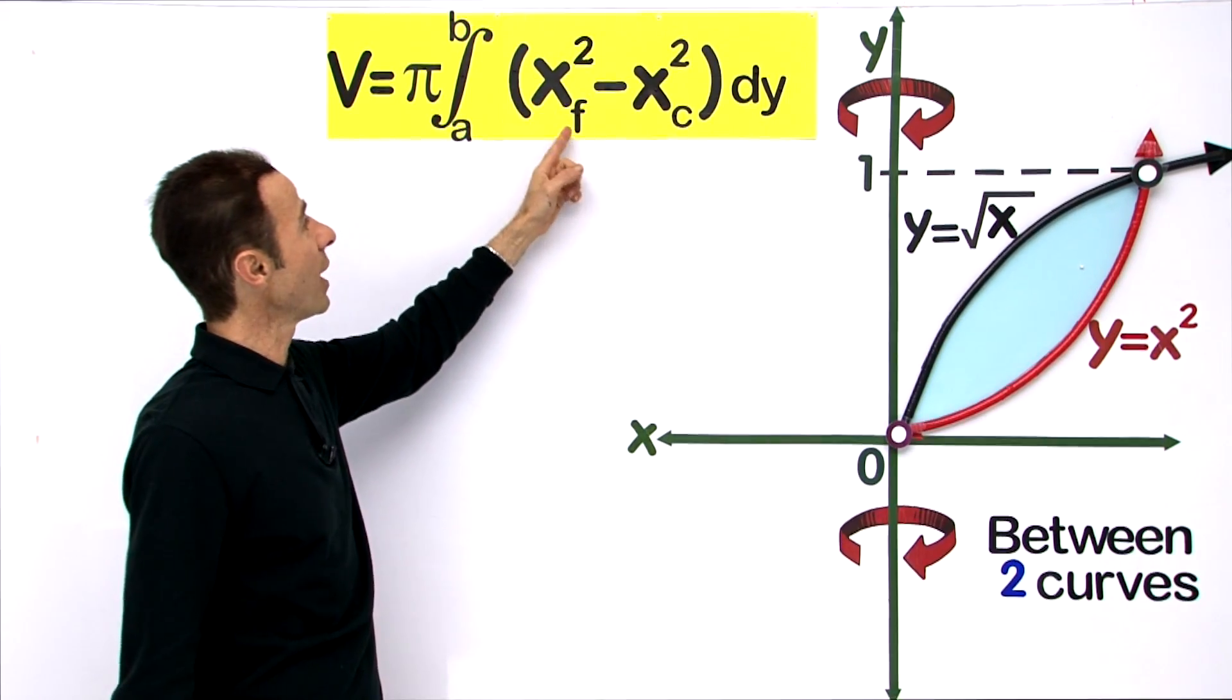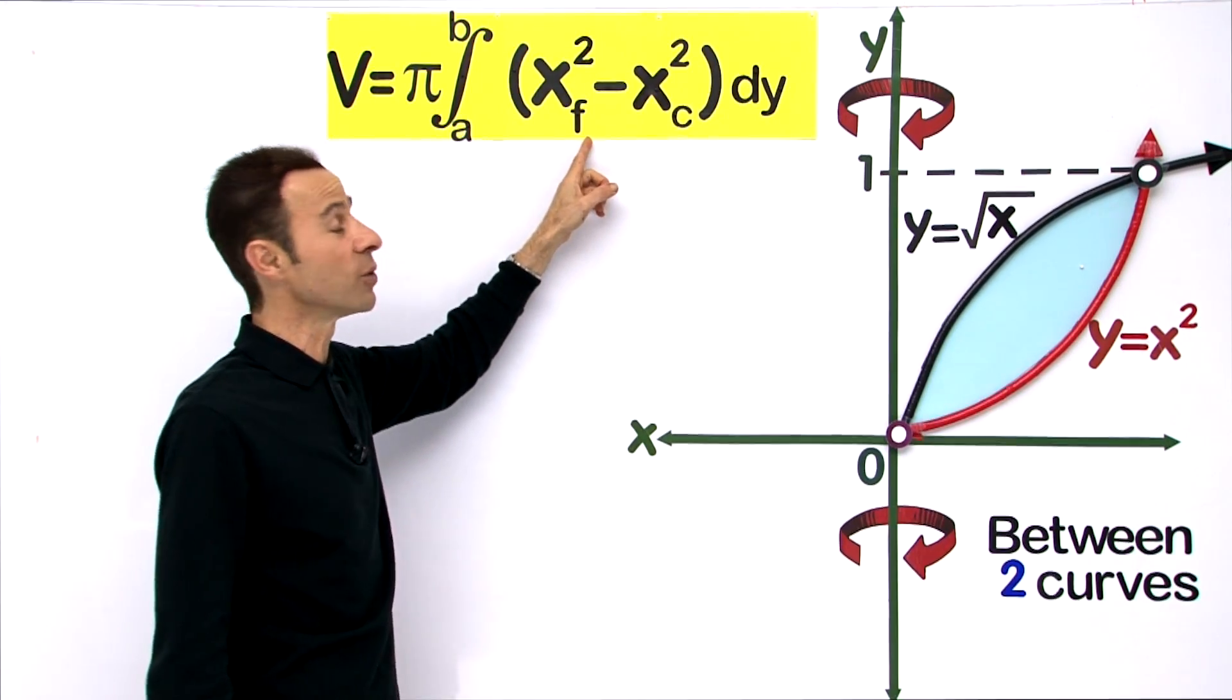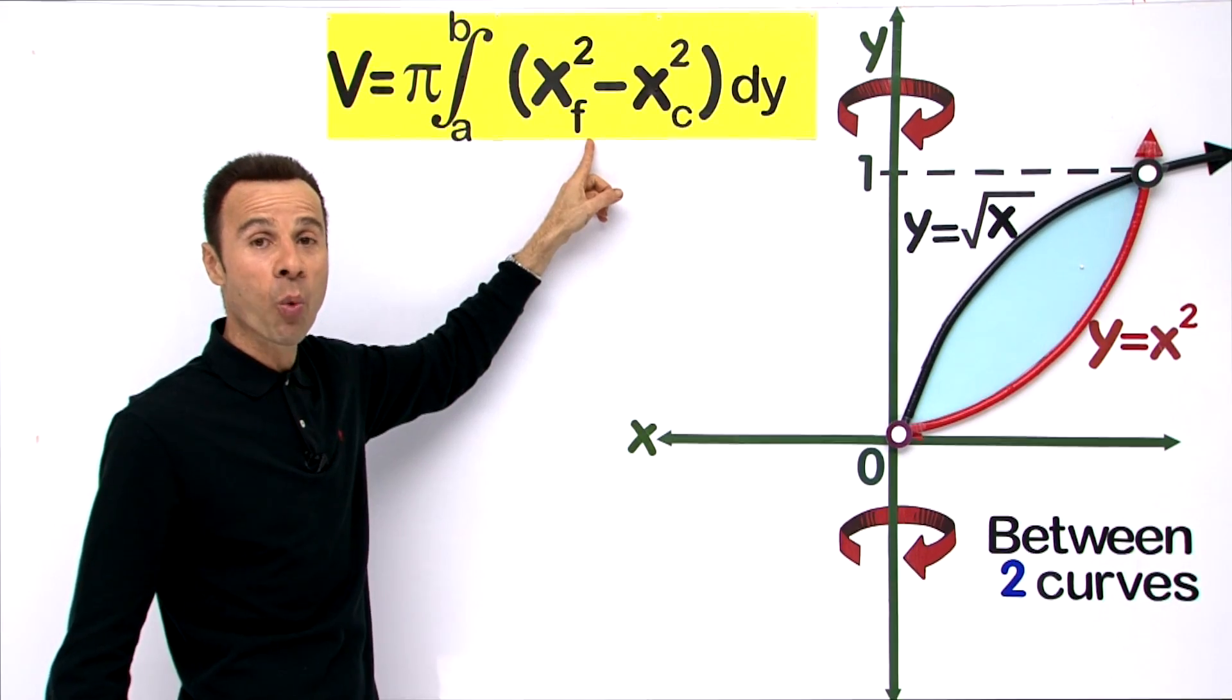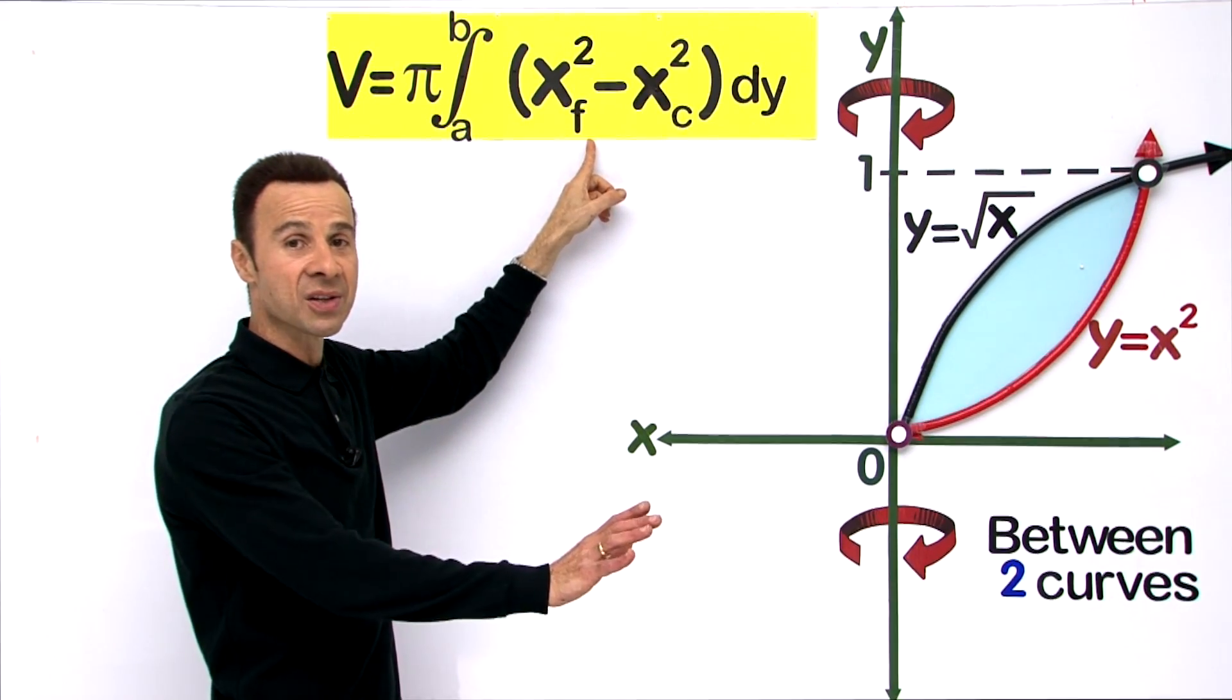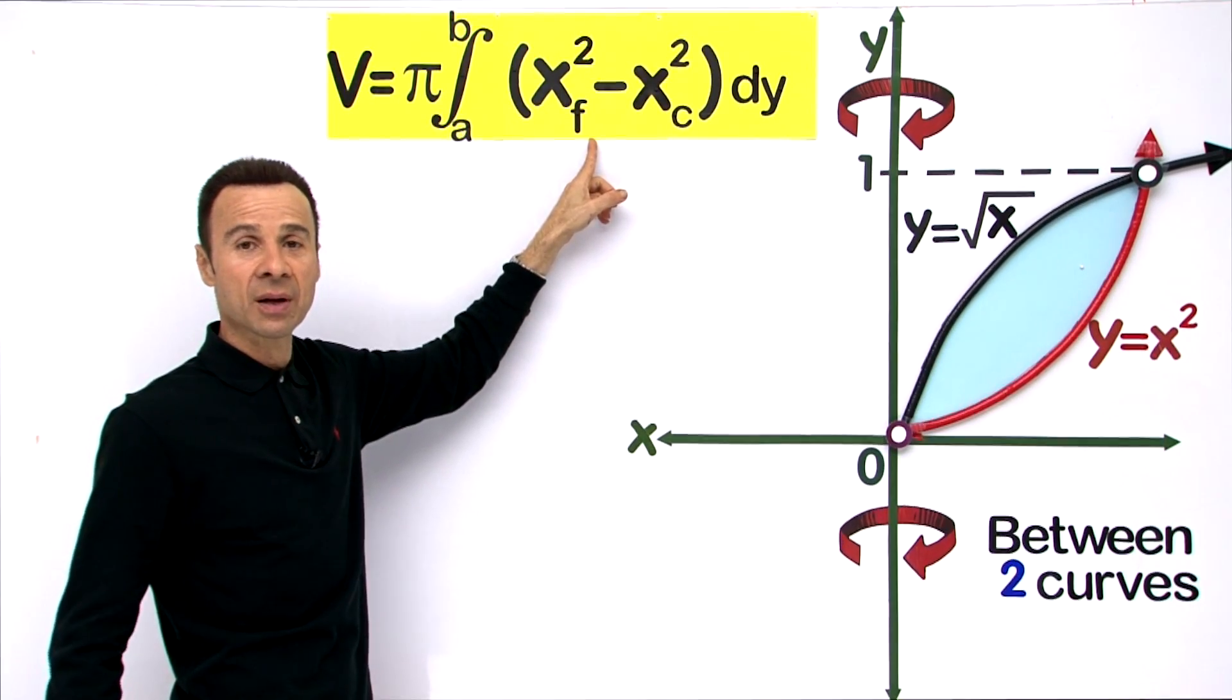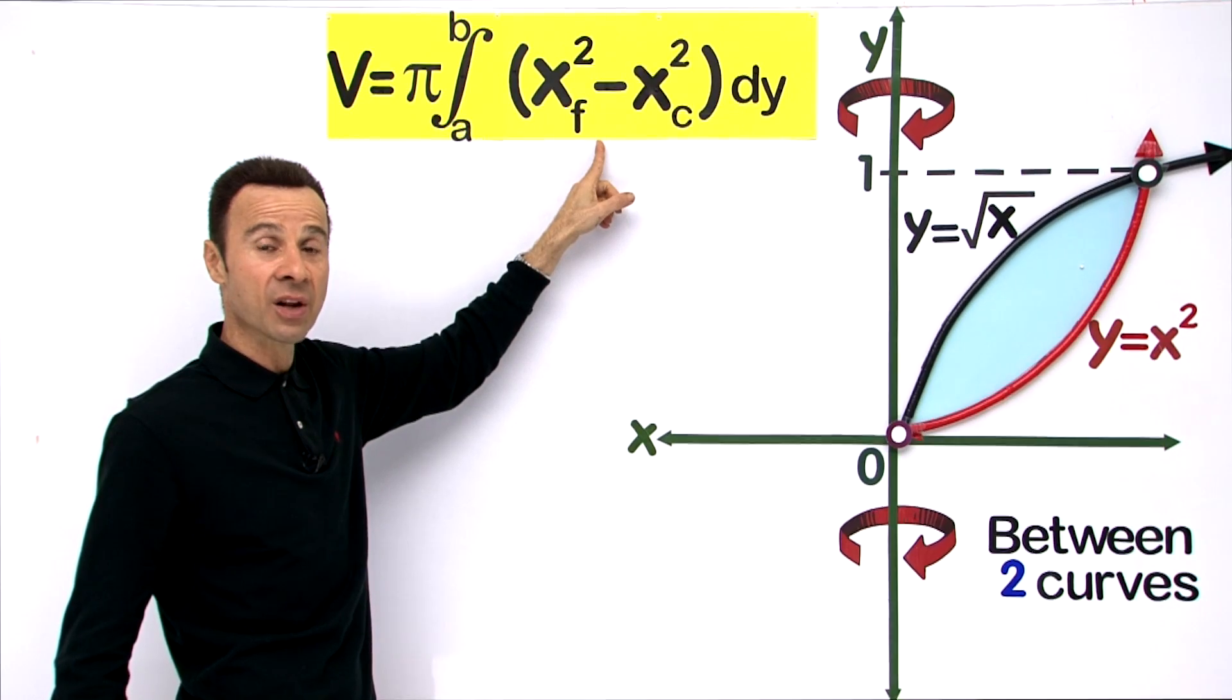We have x squared f minus x squared c. Now, f stands for the furthest away from the axis - some textbooks refer to it as the outer or upper side of the curve. Let us find it.